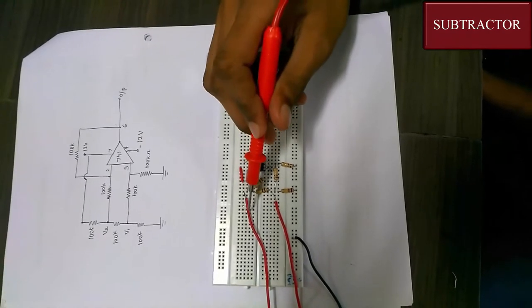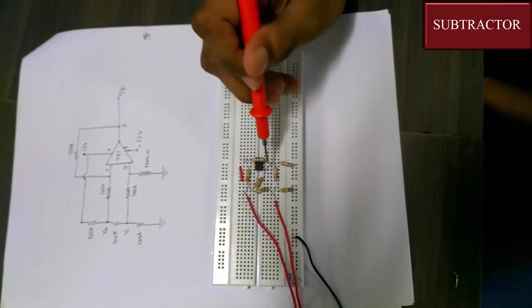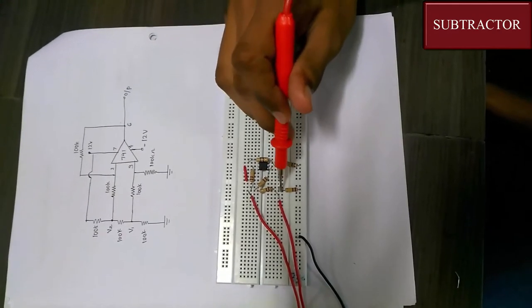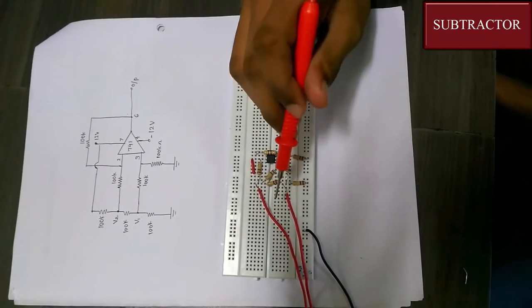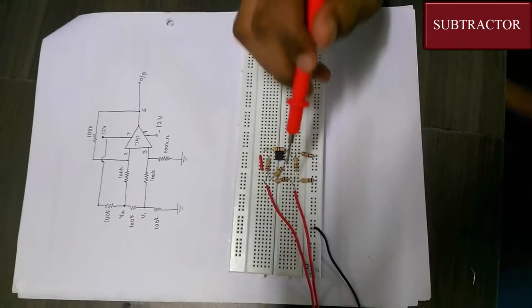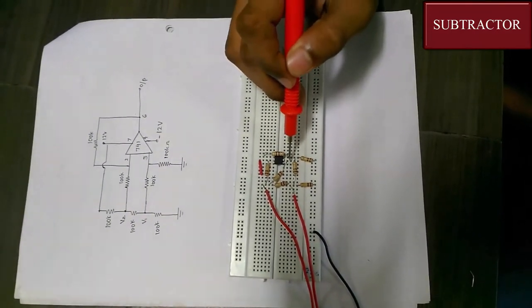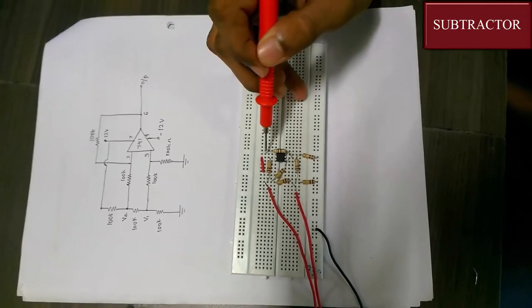The second pin is connected to 100k ohms and that is connected to the V2 junction. On the V2 junction we would be giving the V2 voltage. The third pin of the op-amp is connected to 100k ohms and that is connected to the V1 voltage. The voltage V1 would be given to this junction. Note that the feedback resistance is given from pin 2 to pin 6.